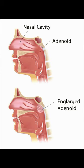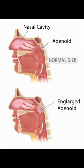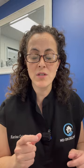Other clues may be somebody who mouth breathes continuously. In this picture here by the American Academy of Otolaryngology, we see the depiction of a normal adenoid size and that of an enlarged adenoid. It's important to note the proximity of the adenoids to the eustachian tube.